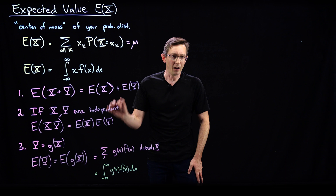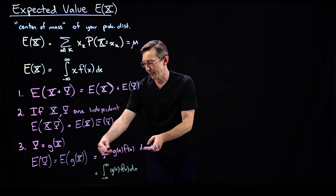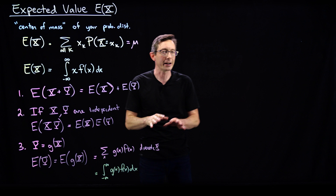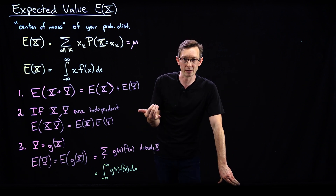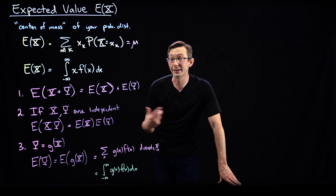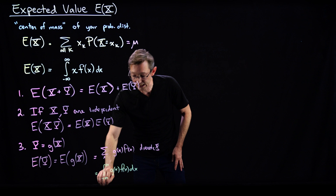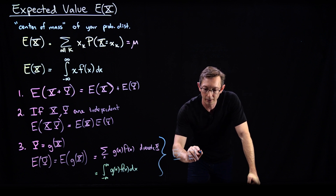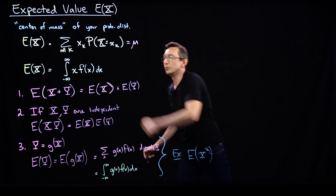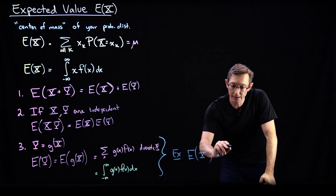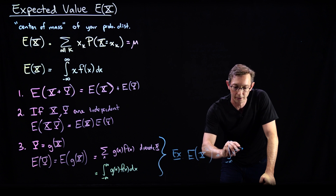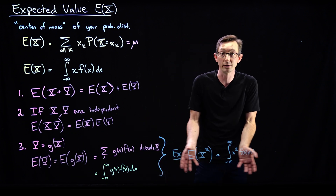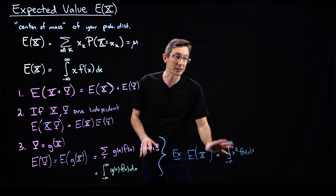This is actually not obvious — that the expected value of a function of x would just replace x with g(x). That's not at all obvious; you can prove it but it's a little bit involved, and I'm not going to do it right now. For example, the expected value of x squared — if this is a continuous random variable — would be the integral from negative infinity to infinity of x² · f(x) dx. This is the second moment of my random variable x, a useful quantity we're going to use when we derive the variance and standard deviation.